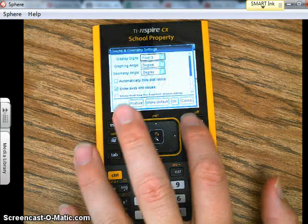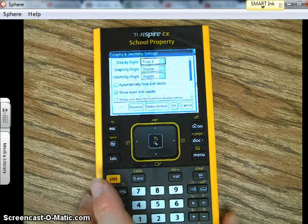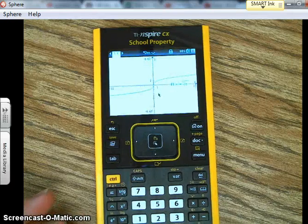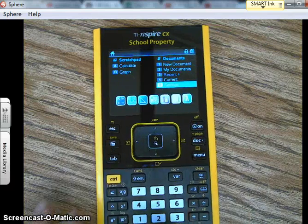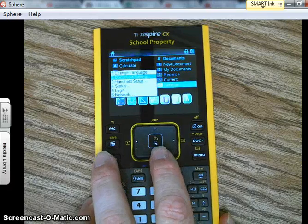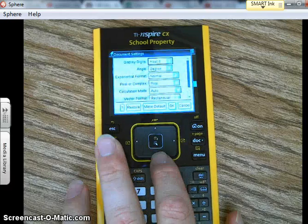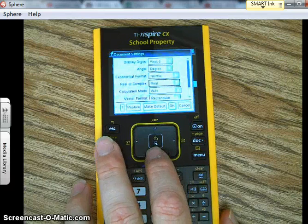Let's escape out of there, on, let's go to this settings. Okay, and then if you go to document settings, okay, right here where it says real and complex, it needs to say real right here.